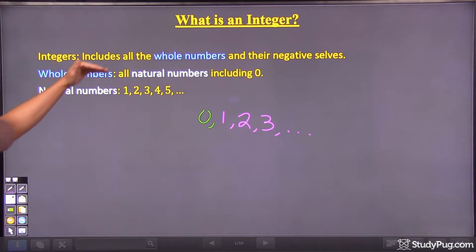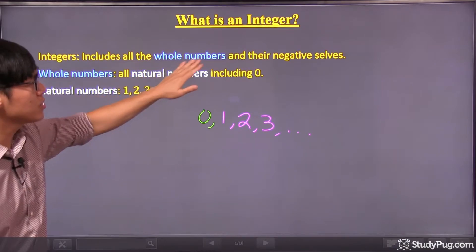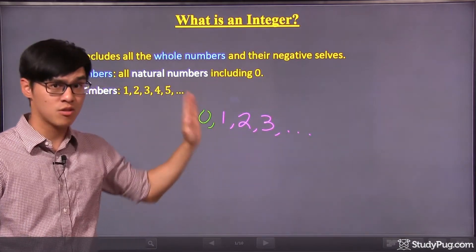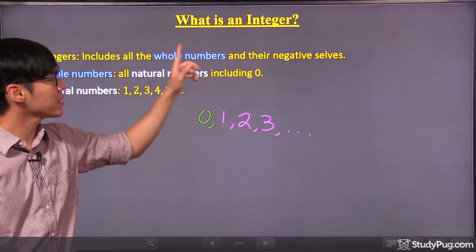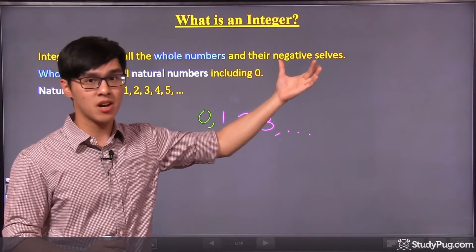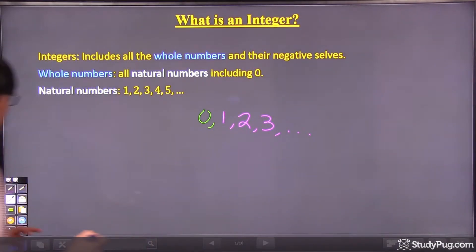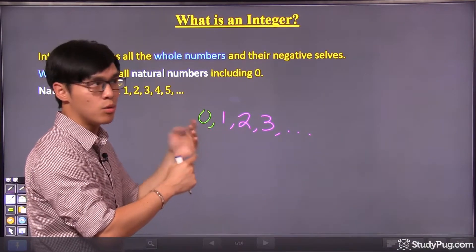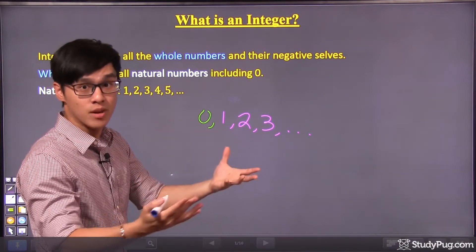Now we can go one step backwards to define integers. Integers are all the whole numbers, so all the numbers over here from zero all the way to infinity: zero, one, two, three, so on and so forth, and their negative selves. So what does it mean by their negative selves? So it's easy. If we have one, what is the negative of one? Well, negative of one will be negative one.